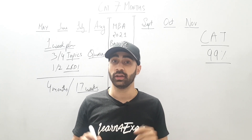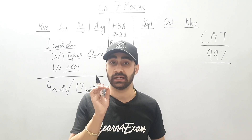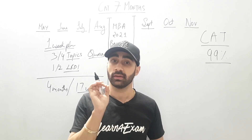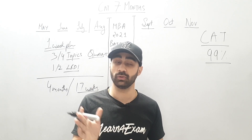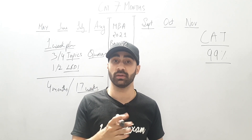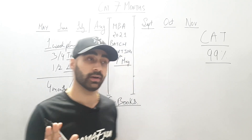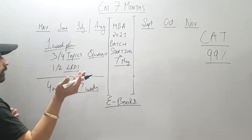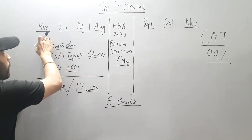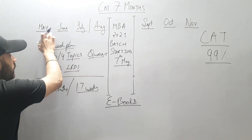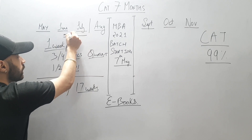For verbal: daily one RC, five Para Jumbles, and half an hour of reading — The Hindu or Times of India. You might not feel like studying it but you will study it, okay. And after these three months, do not give a mock test.